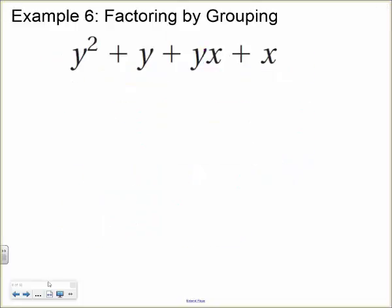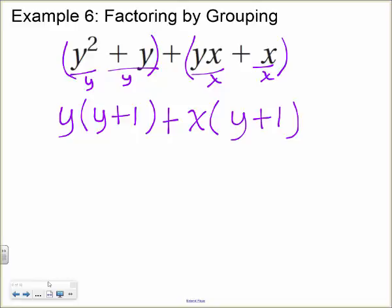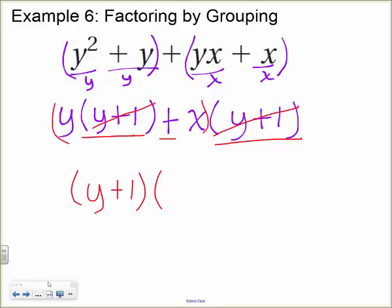Here's another example of factoring by grouping. Group the first two terms and the last two. The first two have a y in common, so factor out y, leaving y(y + 1). The second two have an x in common, so factor out x, leaving x(y + 1). Both groups now share the common factor (y + 1), so factor that out. This cancels from both terms, leaving y and x, giving the fully factored form (y + 1)(y + x).